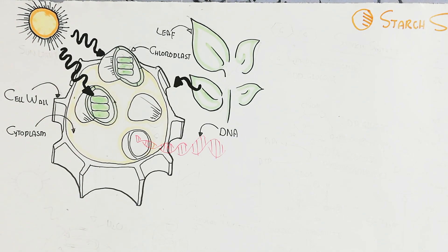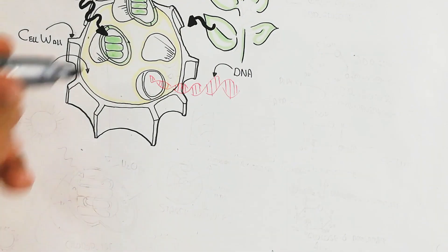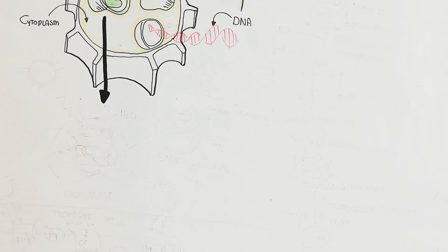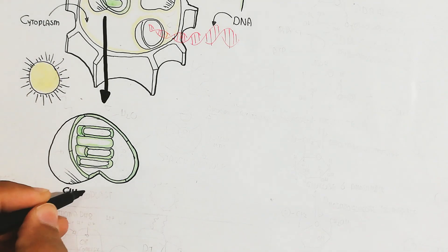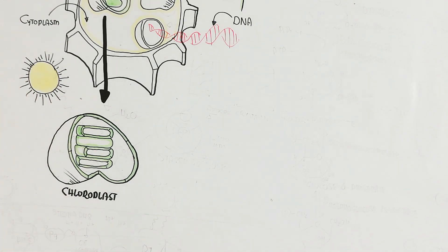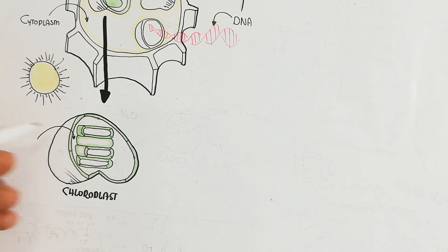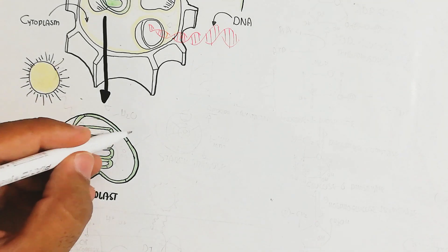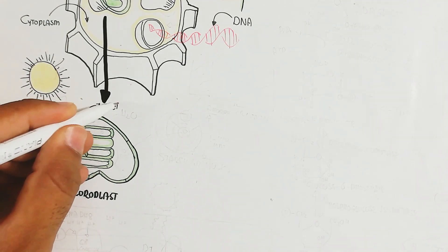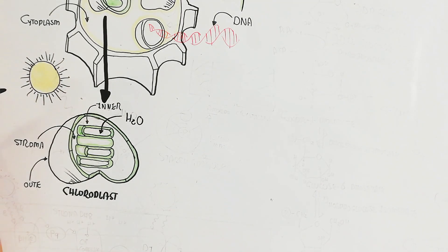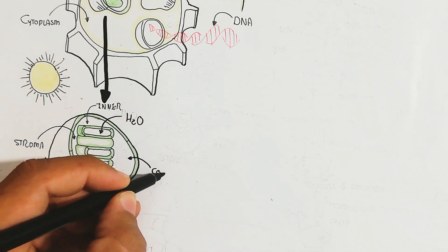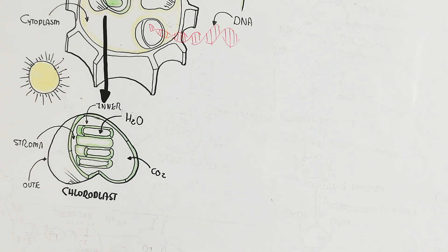The chloroplast contains a thylakoid membrane — it is a double membrane organelle. The thylakoid membrane contains Photosystem 2 and Photosystem 1. The thylakoid has a stack-like structure; inside is the empty lumen, while the outer region is known as the stroma of the chloroplast. The chloroplast contains its own DNA and can replicate itself.